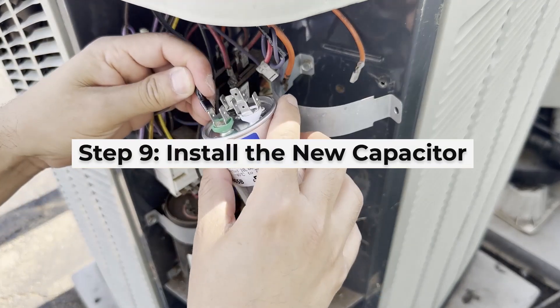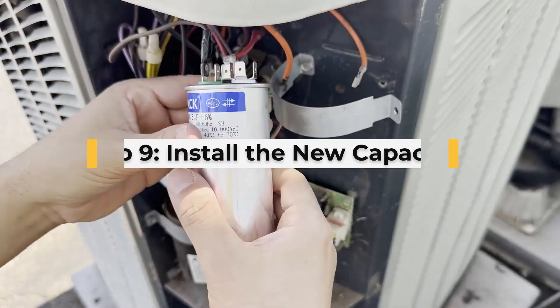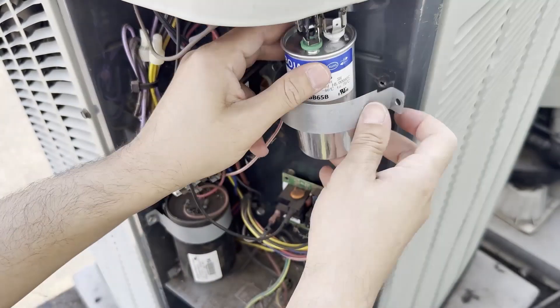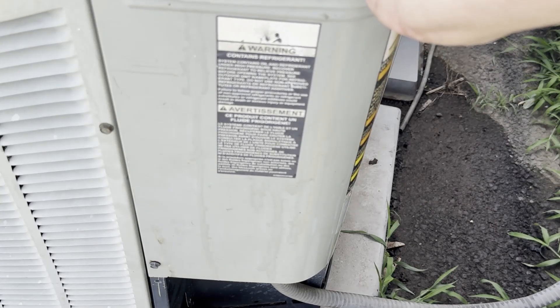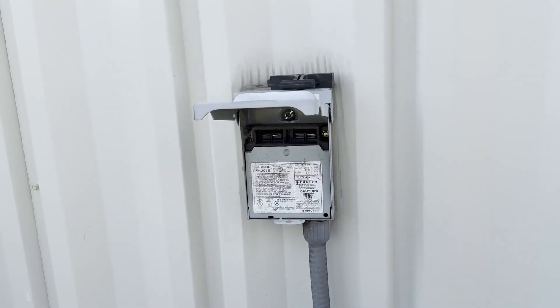Step 9 would be to install the new capacitor. Mount the new capacitor in place and reconnect the wires using the photo you took earlier as a reference. Follow the colors of the wire as shown in the photo so you don't make a mistake. Slide the panel back on, screw it in, and reconnect power at the disconnect box or the breaker.